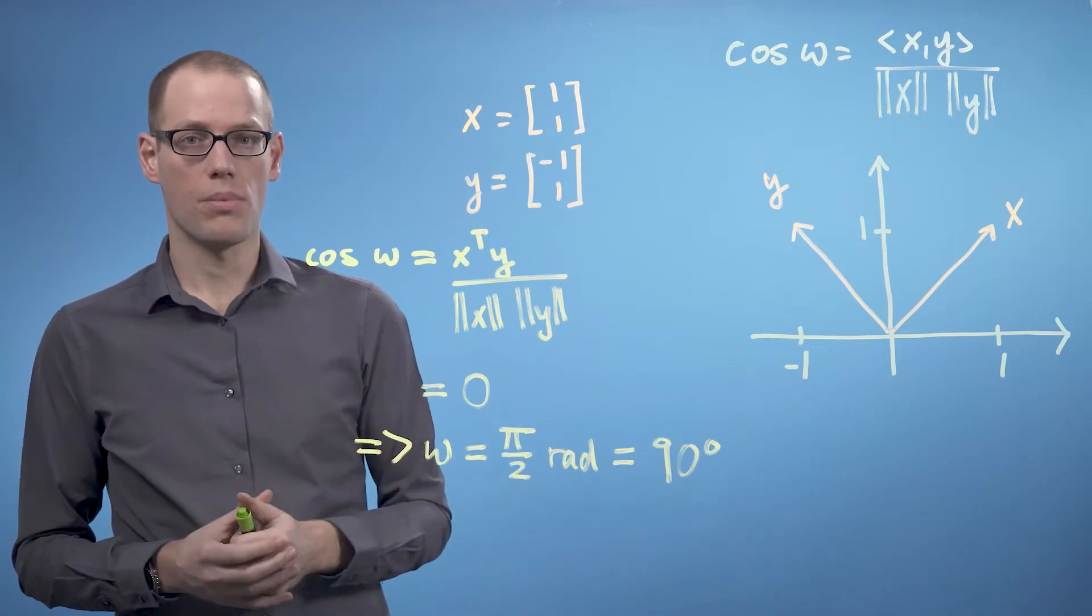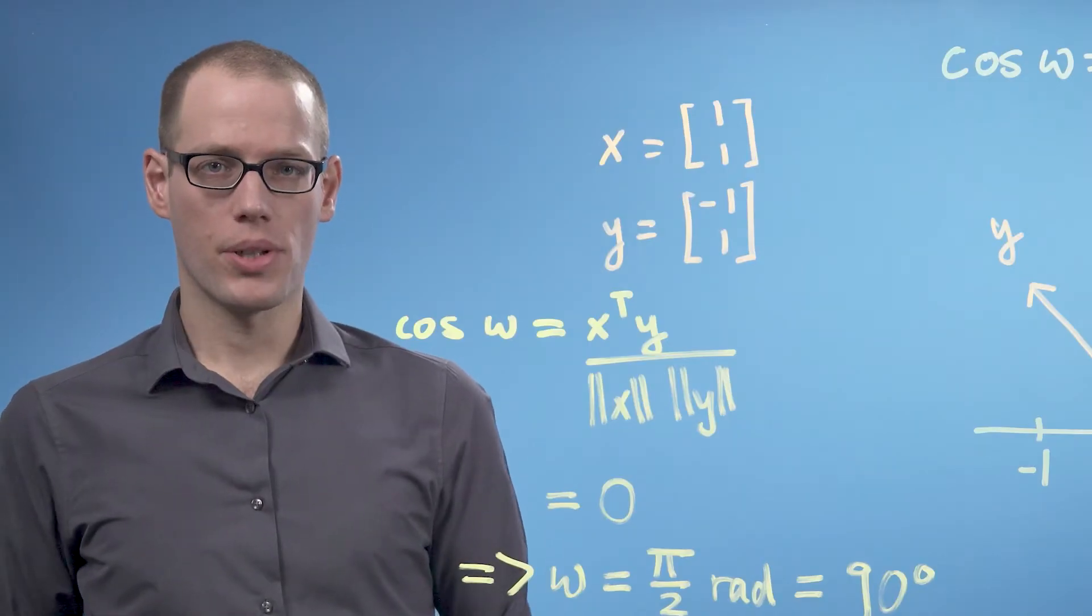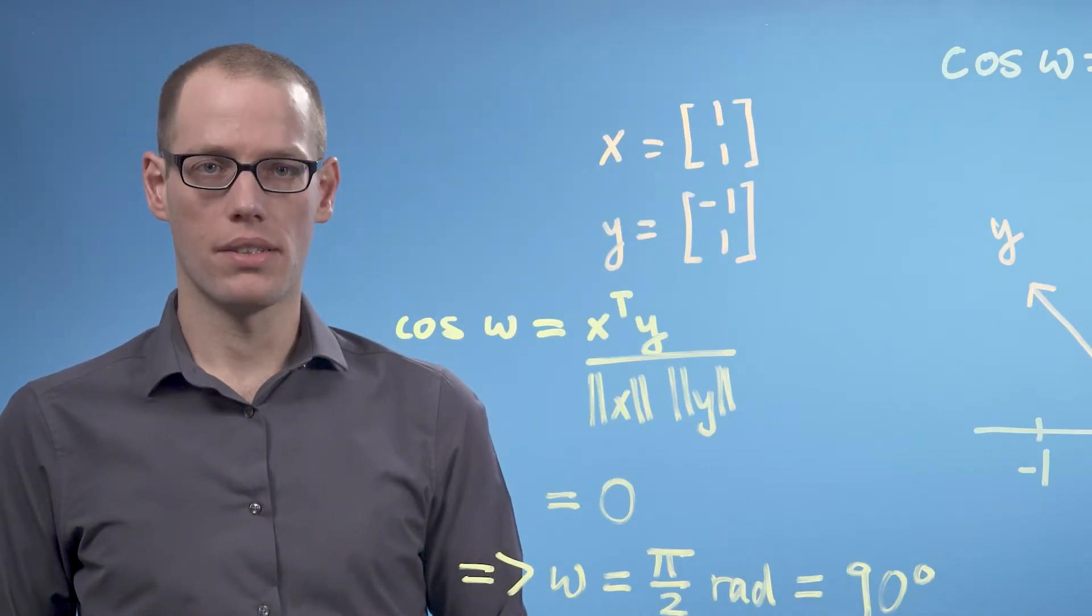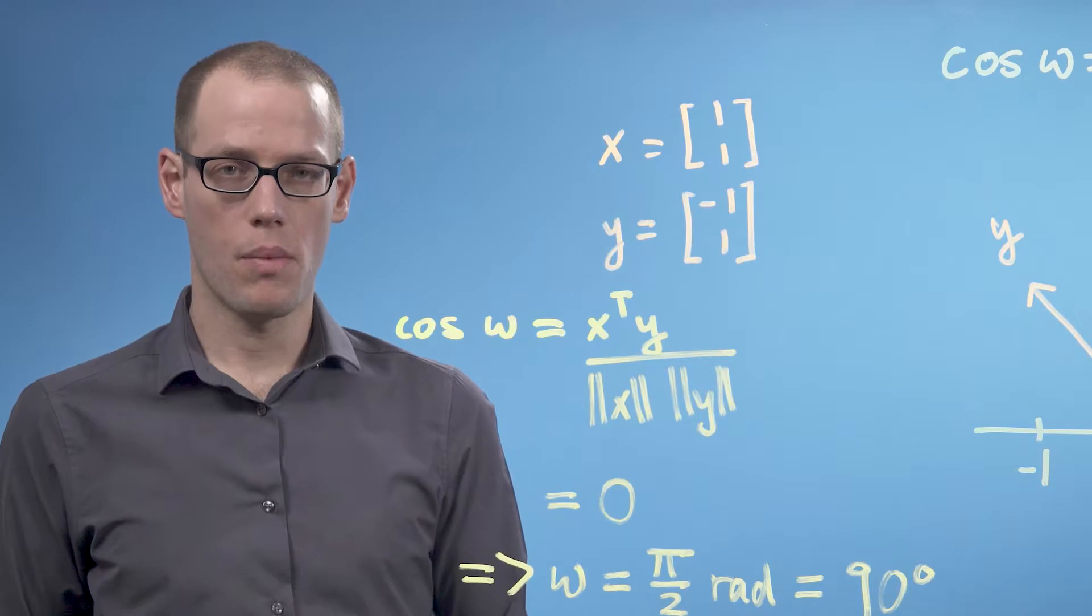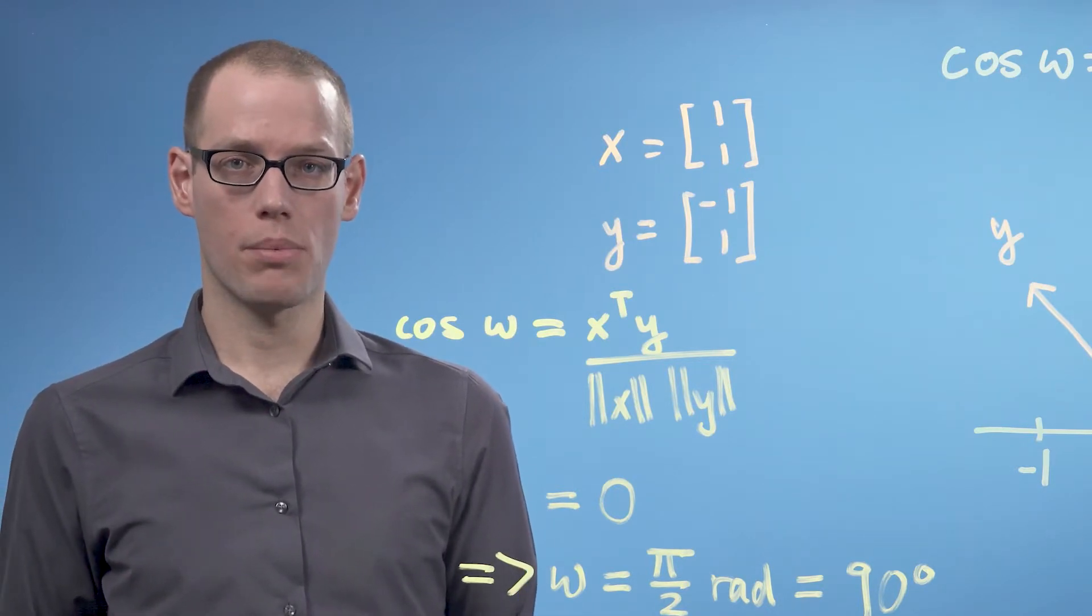This is an example where two vectors are orthogonal. Generally, the inner product allows us to characterize orthogonality. Two vectors x and y, where x and y are non-zero vectors, are orthogonal if and only if their inner product is 0.